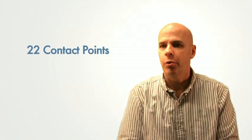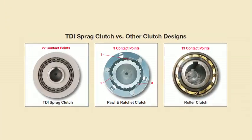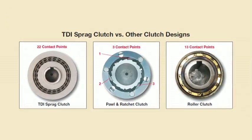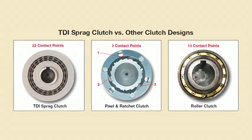We've packed 22 contact points that evenly disperse the torque through the clutch, versus one or three points on other stock clutches. The result is more load-carrying members, greater contact area, and the ability to handle torque loads that could cause other clutches to fail.